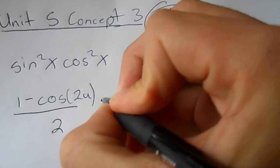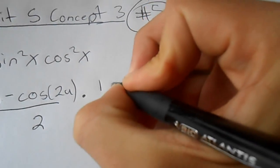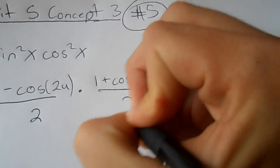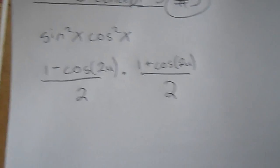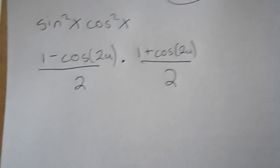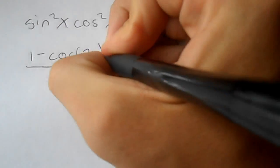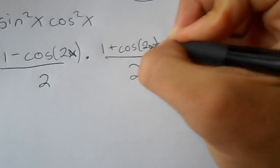Then for cos²(x), it would be (1 + cos(2u))/2. Now the u, that's just x right now, so let's substitute that in.